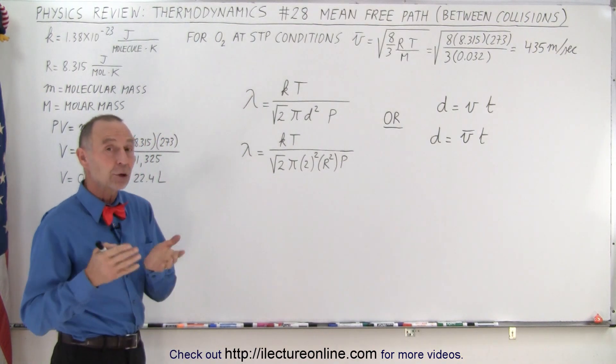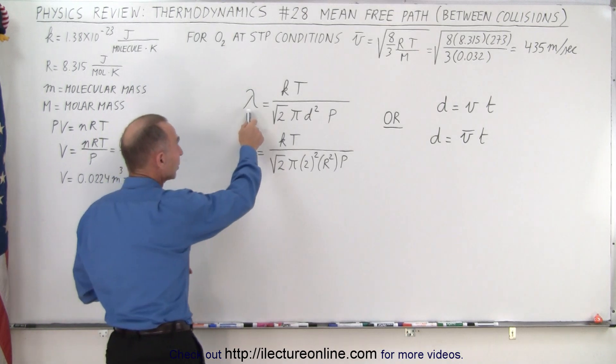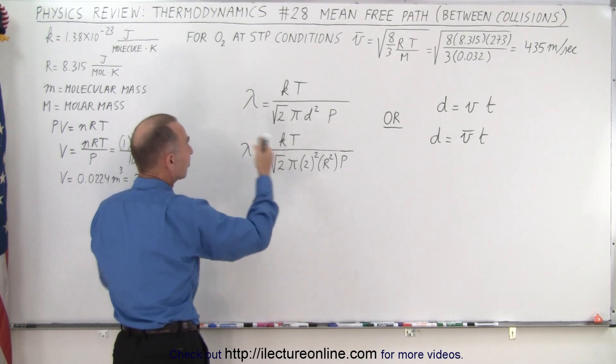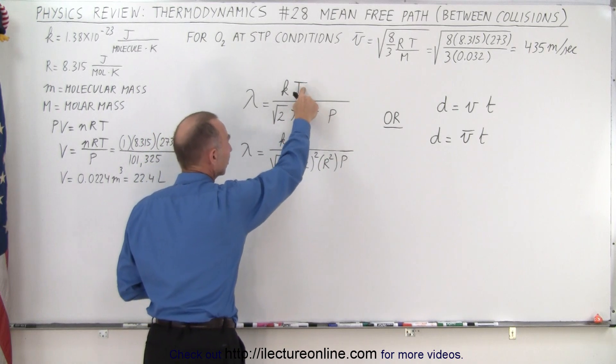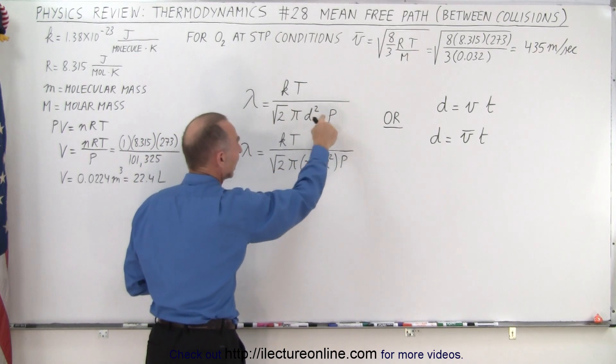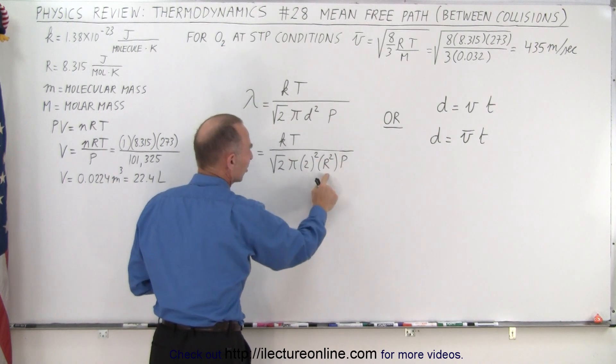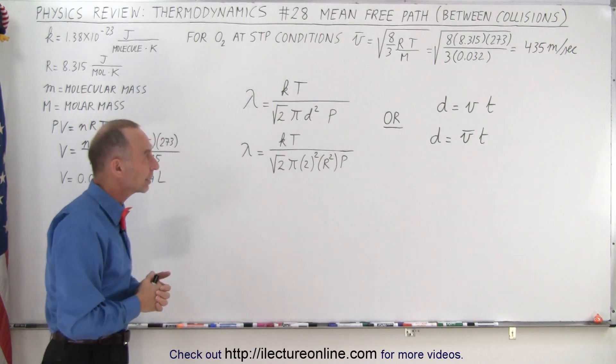And it turns out that we have an equation for that. We use the letter lambda, the Greek letter lambda, to indicate mean free path. And here we have an equation in terms of the temperature of the gas, the pressure of the gas, and the diameter of the molecule. And of course, we're going to change that to the radius. It makes it a little bit easier to calculate.